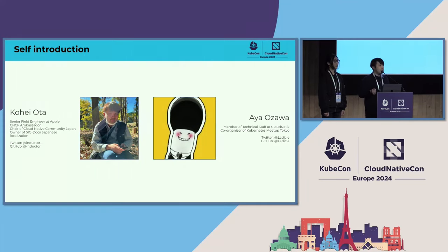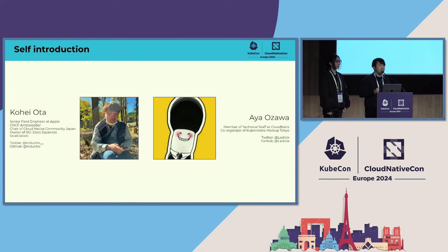Let me start with a self-introduction. My name is Kohei, and I work at Apple as a SIG Node engineer. I work on open source, and my focus right now is cloud native technologies.